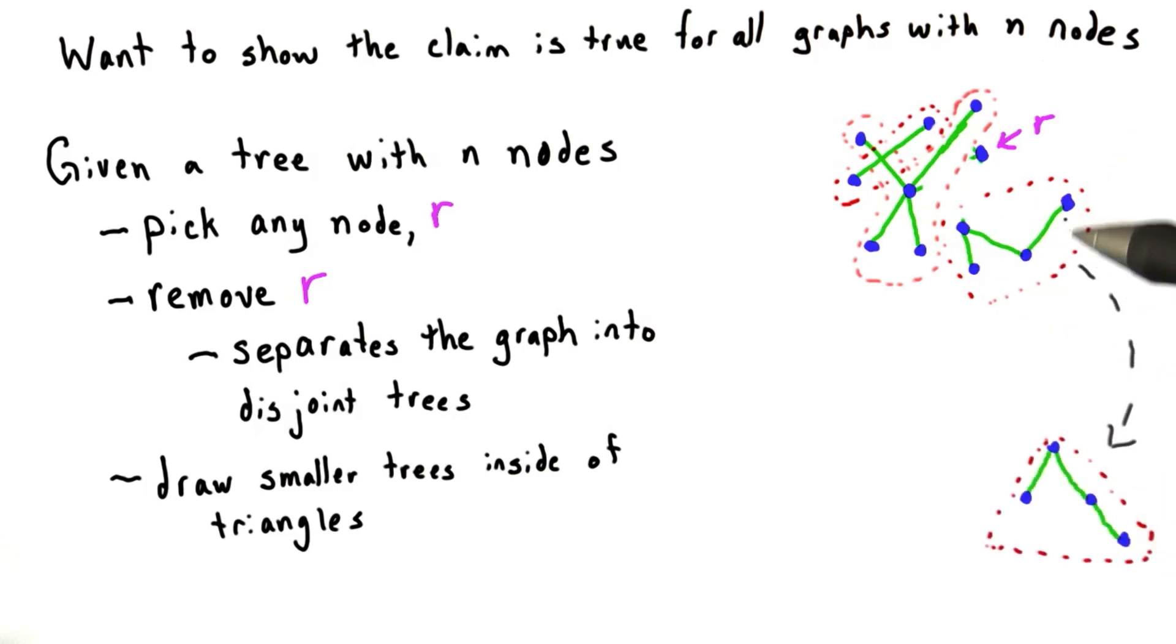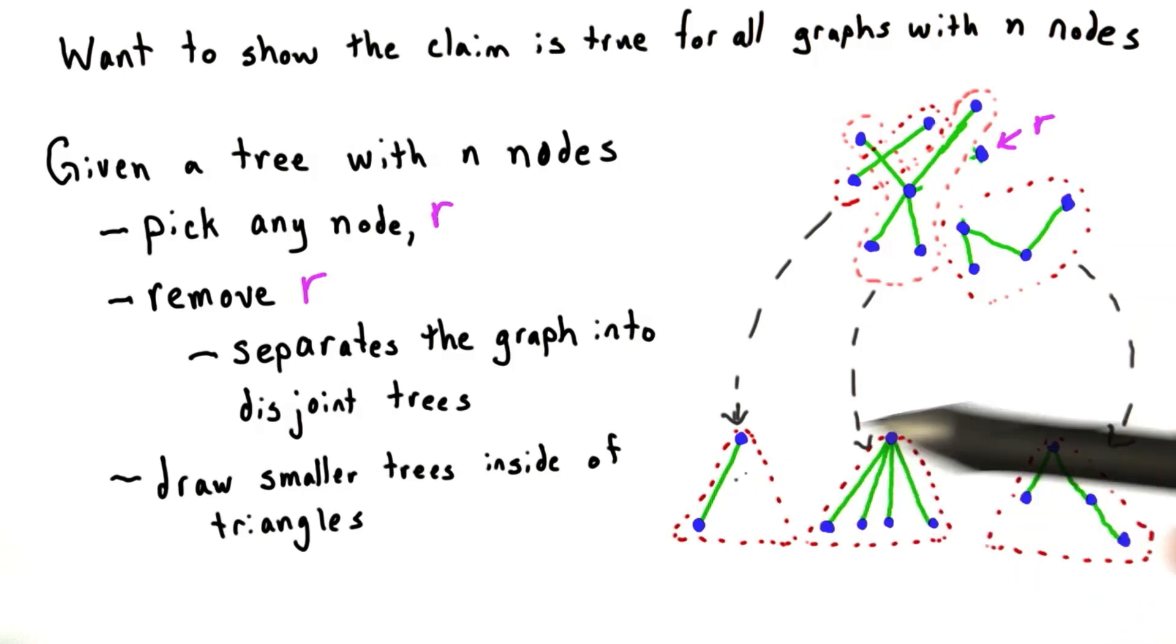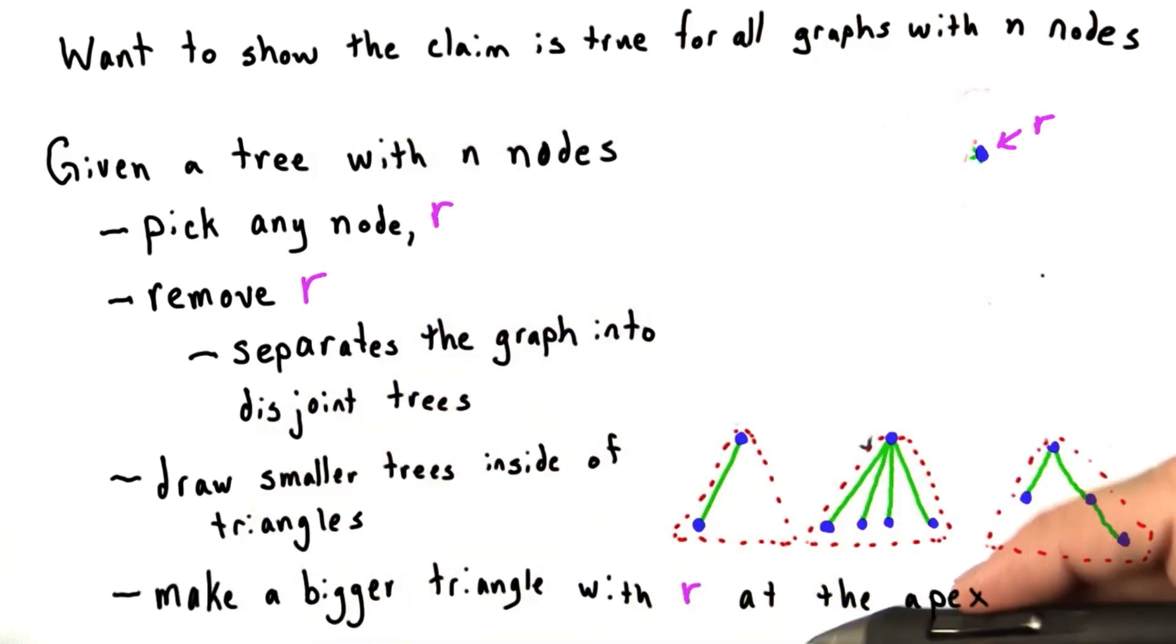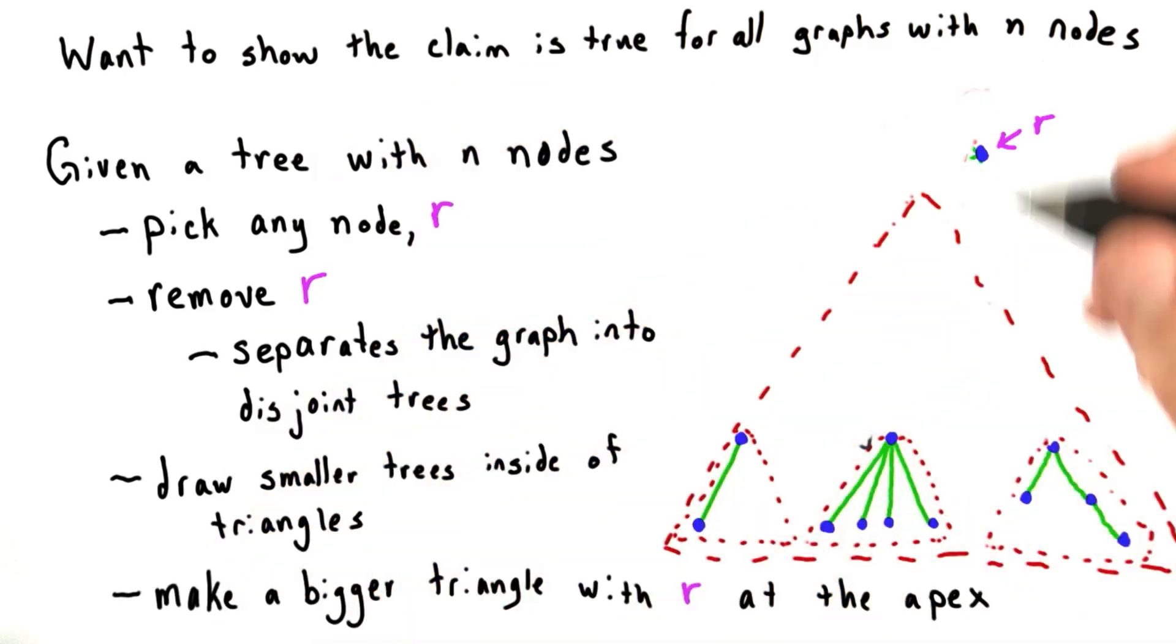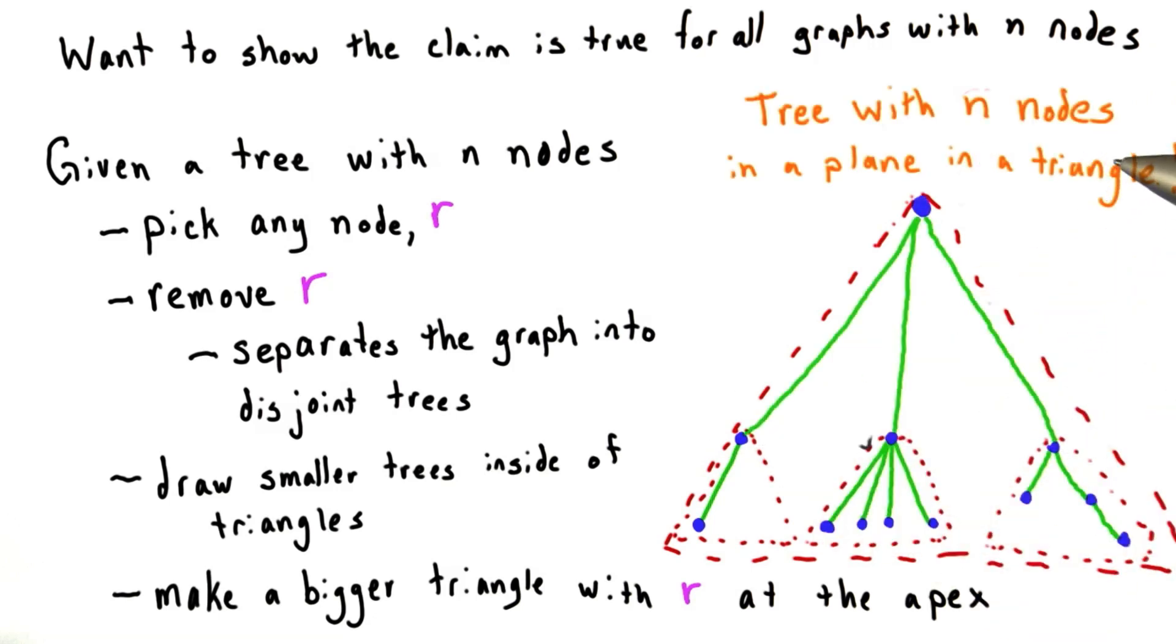First, we can take this tree of four nodes and draw it inside of a triangle. Notice that the node that was connected to R is at the apex of the triangle. And then we can do the same for the other two trees. And then in our last step, we make a bigger triangle. And we put R at the apex. And then connect it to the apexes of the other triangles. So this verifies our claim and shows that all tree graphs are planar.